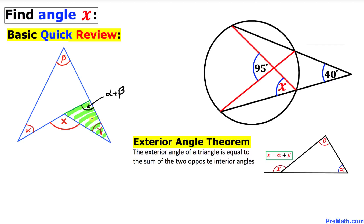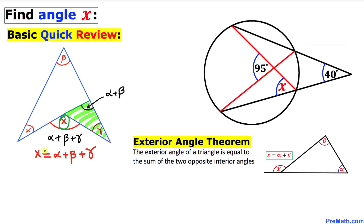Now let's focus on another shaded triangle. We can see that this angle is going to be our exterior angle, equal to the sum of the two opposite interior angles. Therefore, angle x is equal to the sum of the three interior angles: alpha plus beta plus gamma.